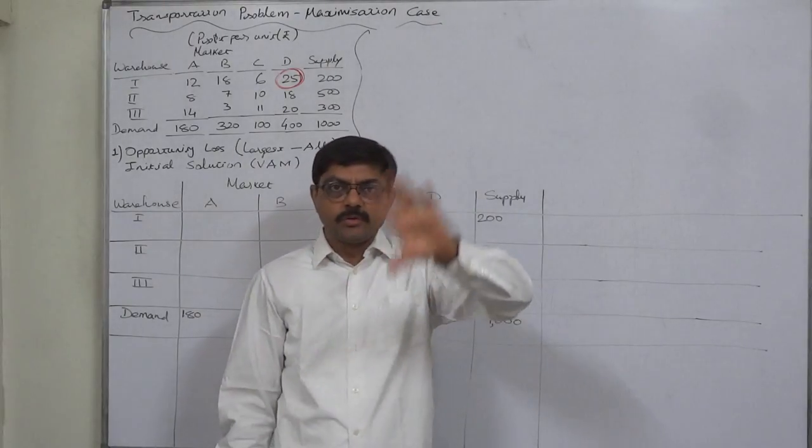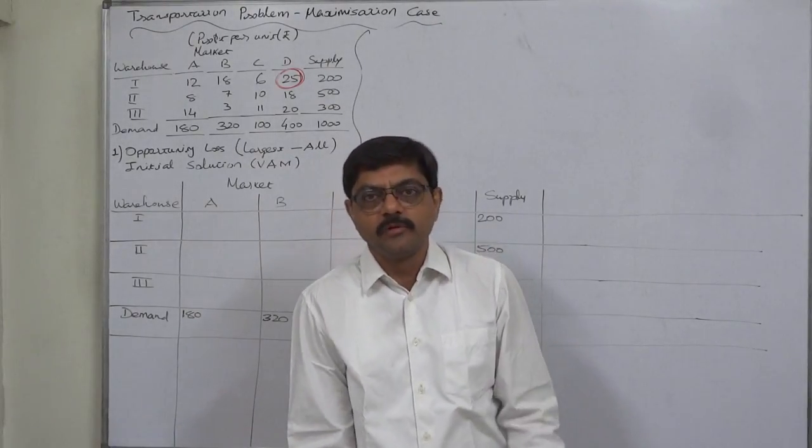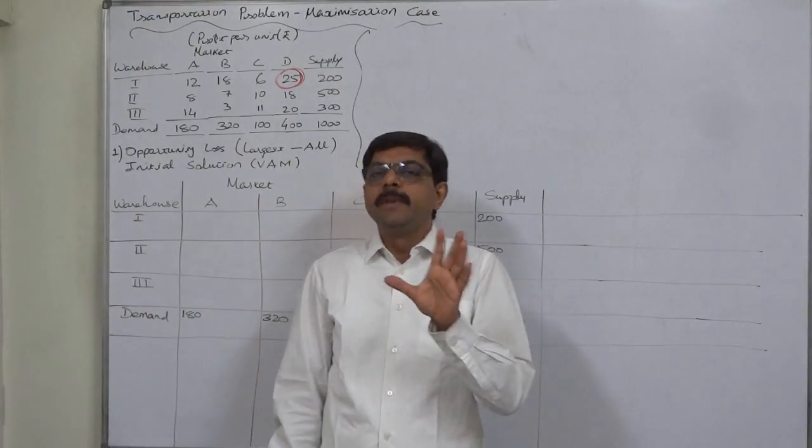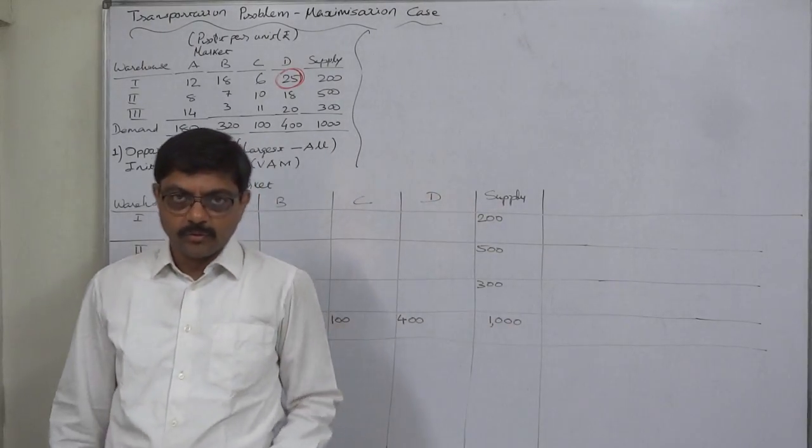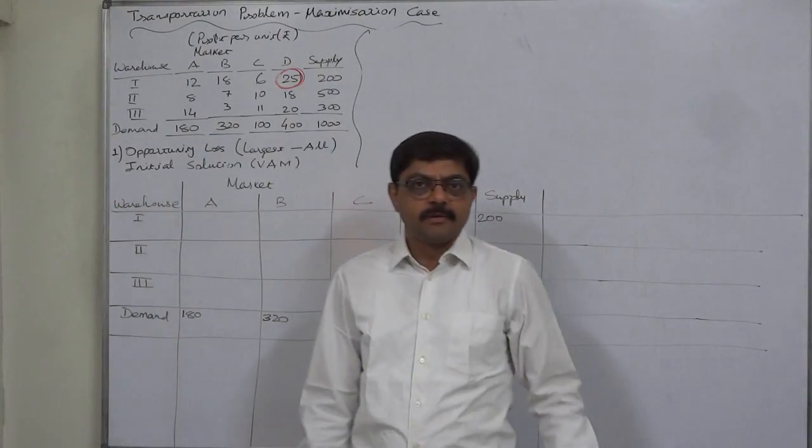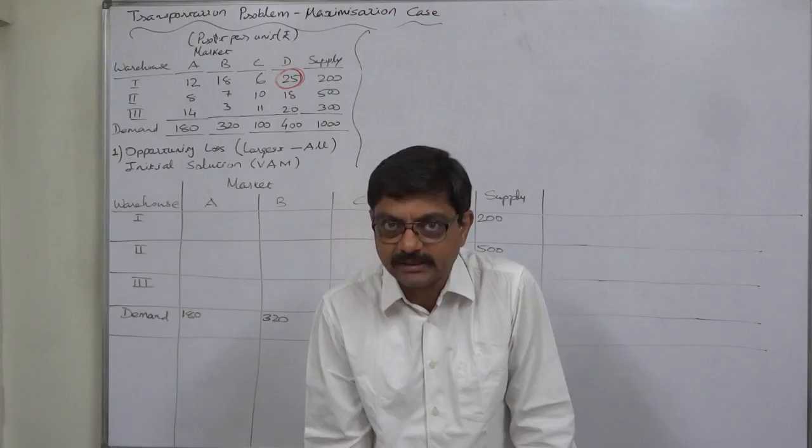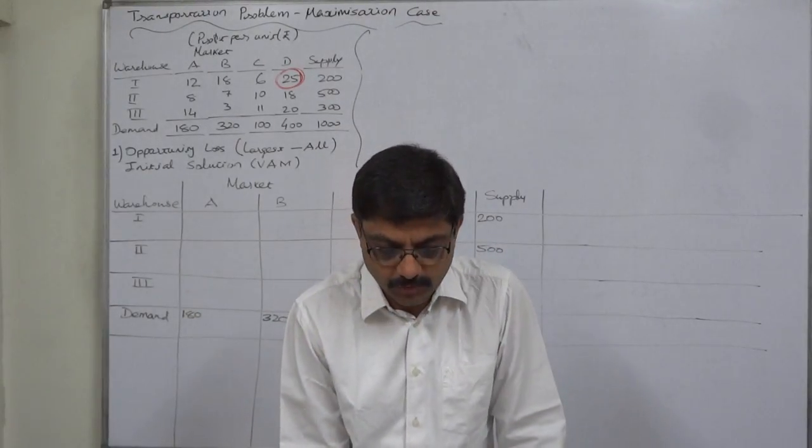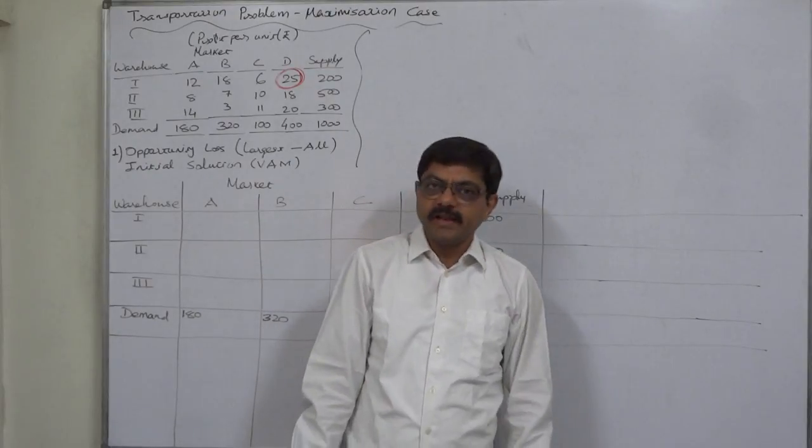The entire process of solving, the algorithm of solving transportation problem, is basically for minimization objective. In case of profit, it is obvious that the objective is maximization. Then how to solve a maximization transportation problem? The process is very simple.